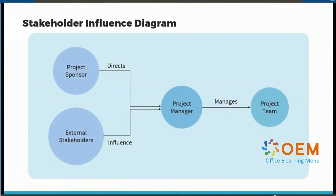Looking at our influence diagram, we can see the key relationships in project stakeholder management. The project sponsor provides direction and resources to the project manager, who plays a central role in the project. The project manager directly manages the project team, ensuring work gets done according to plan. External stakeholders, including clients and end users, influence project decisions through their feedback and requirements. Understanding these relationships will help you manage communication channels effectively and ensure project success through proper stakeholder engagement.